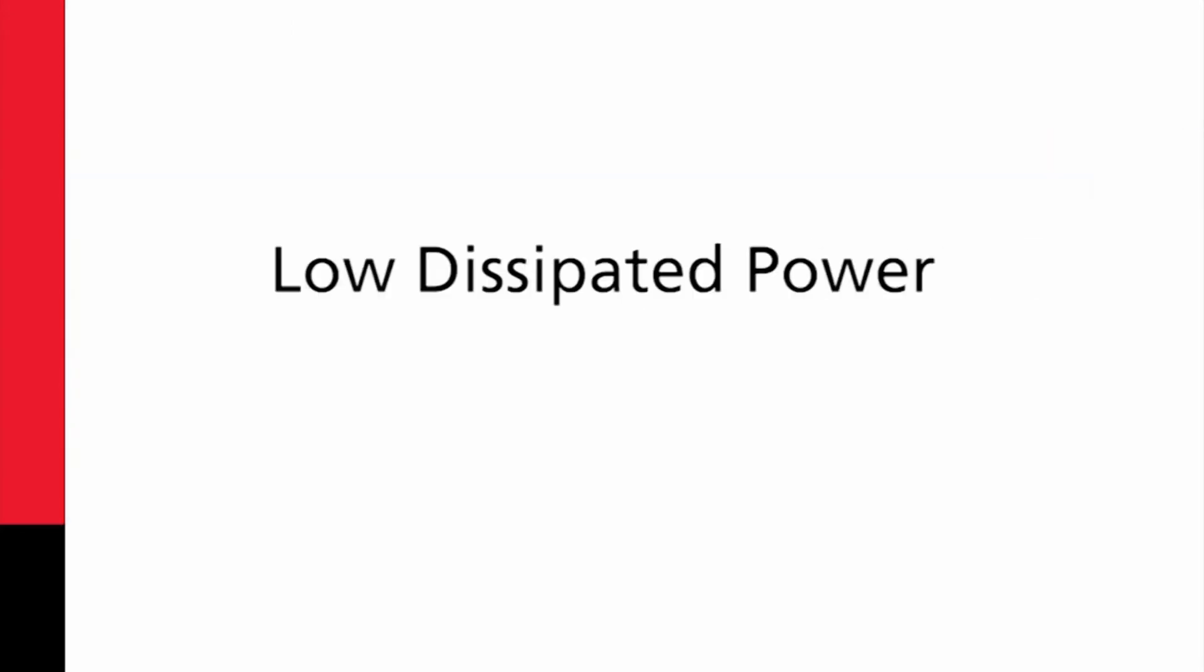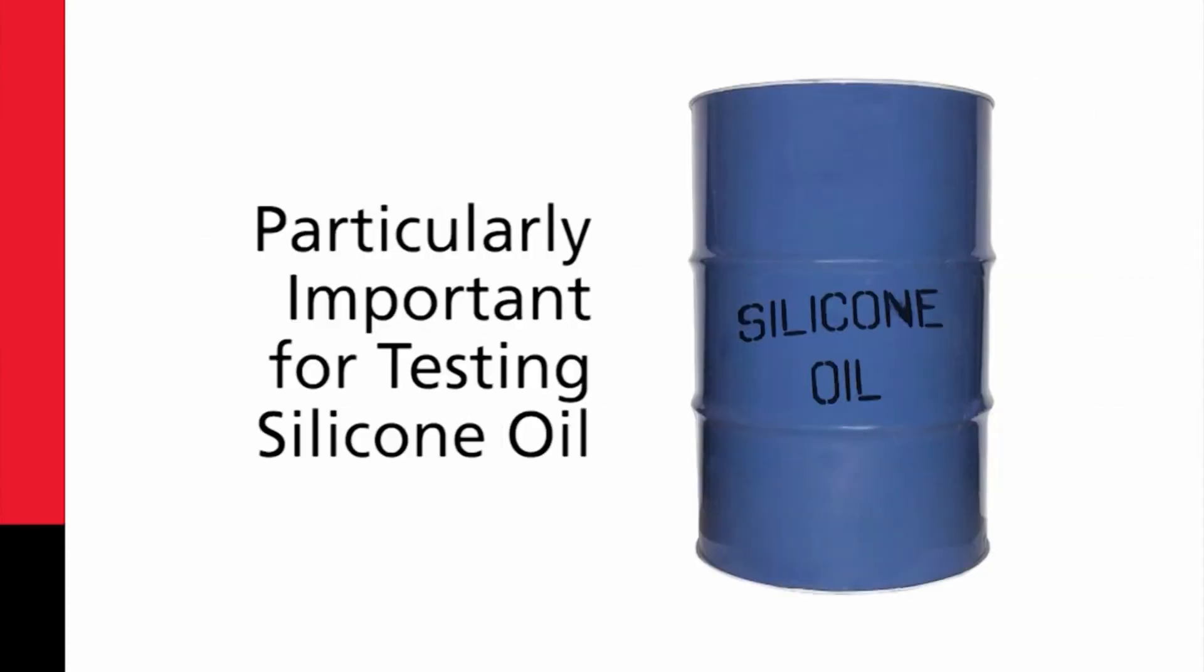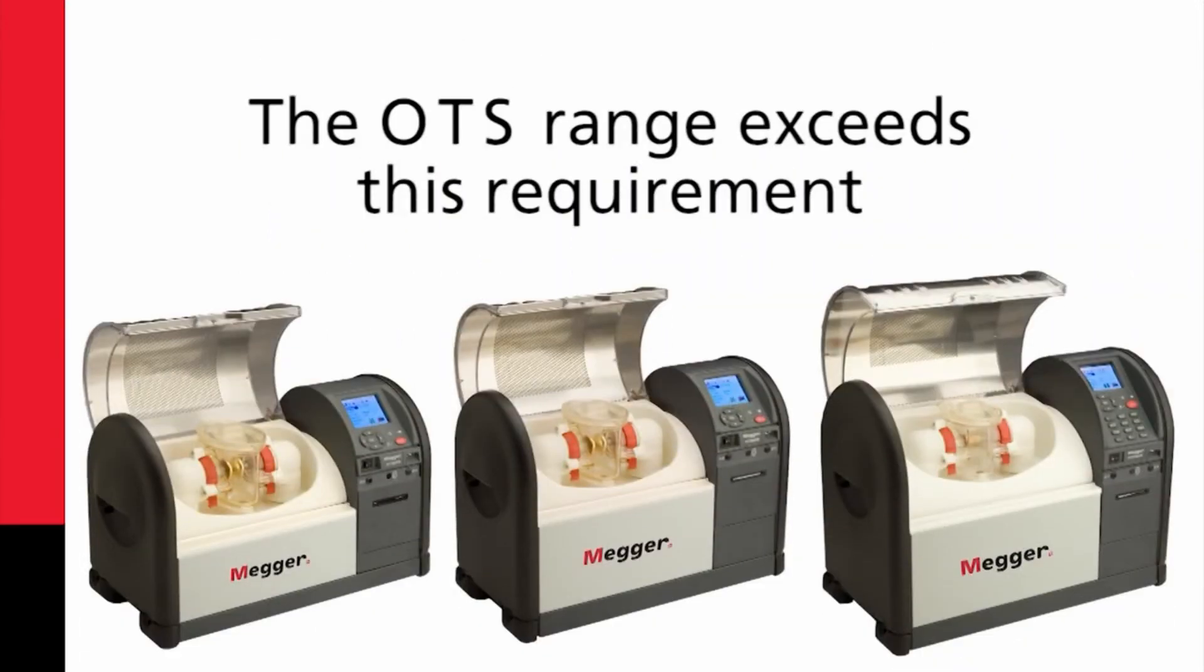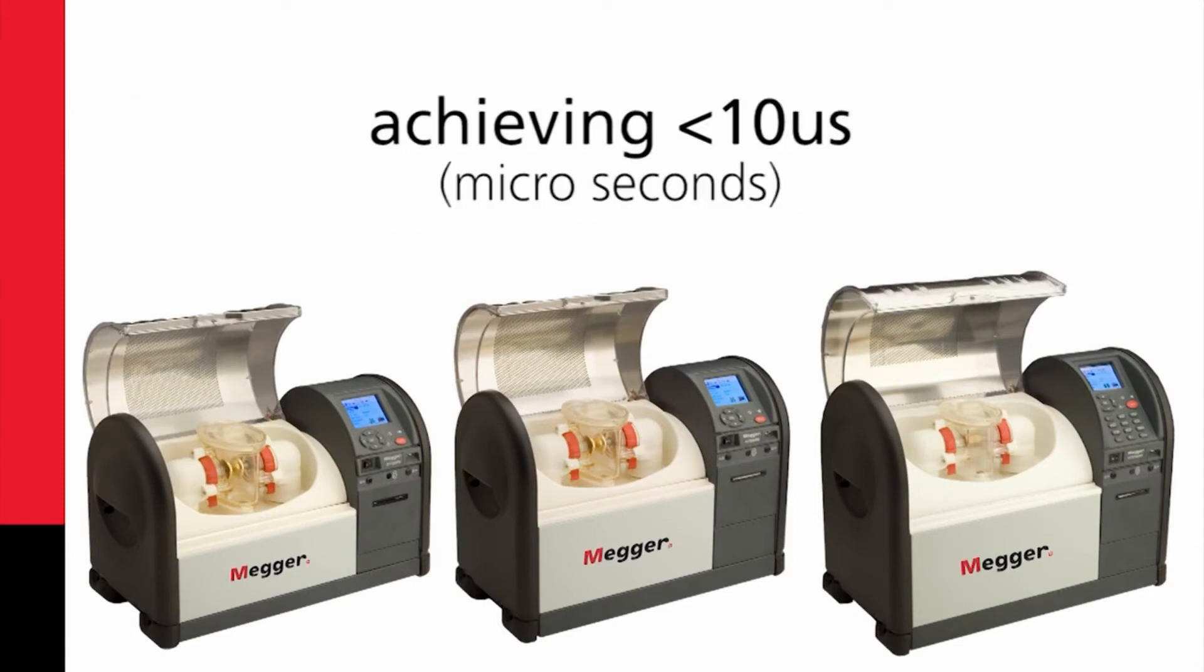Low dissipated power and fast breakdown is particularly important for testing silicon oil. Many old oil test sets cannot meet the less than one millisecond requirement for silicon oil. The OTS range exceeds this requirement, achieving less than 10 microseconds.